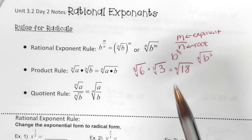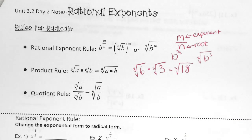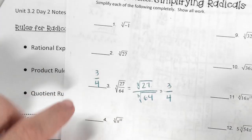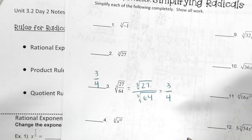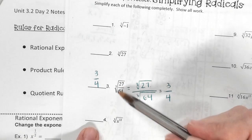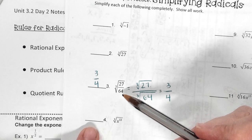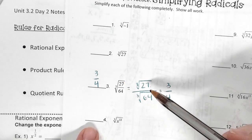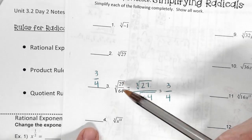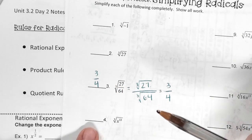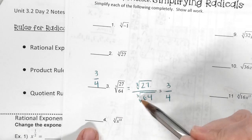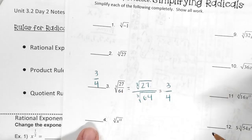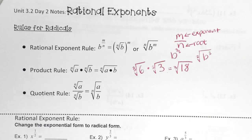Quotient rule — we also talked about this yesterday on number 3 of the practice. We separated. My word of advice is: do not separate unless you can't simplify. 27 over 64 did not simplify, that's why we separated. But if it simplifies, simplify first, because that's going to make your life way easier with smaller exponents and smaller numbers. So if they're separated and you can simplify them, put them together so you can simplify. I'll show you examples of that in a second.